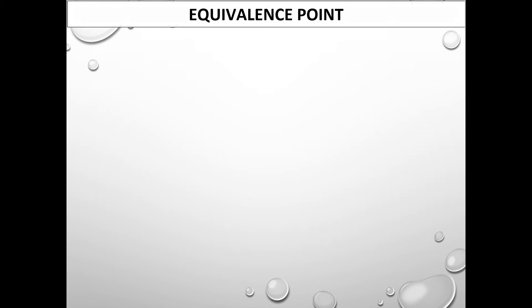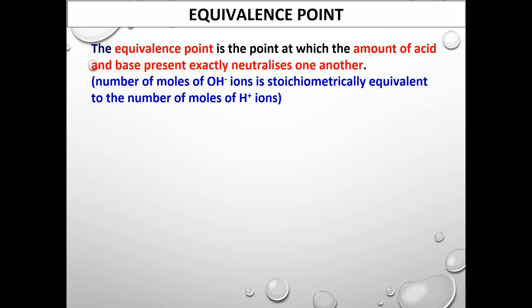In learning titration, there are a few terms that you will need to know. The equivalence point is the point at which the amount of acid and base present exactly neutralizes one another, or the number of moles of hydroxide ions is stoichiometrically equivalent to the number of moles of hydrogen ions.